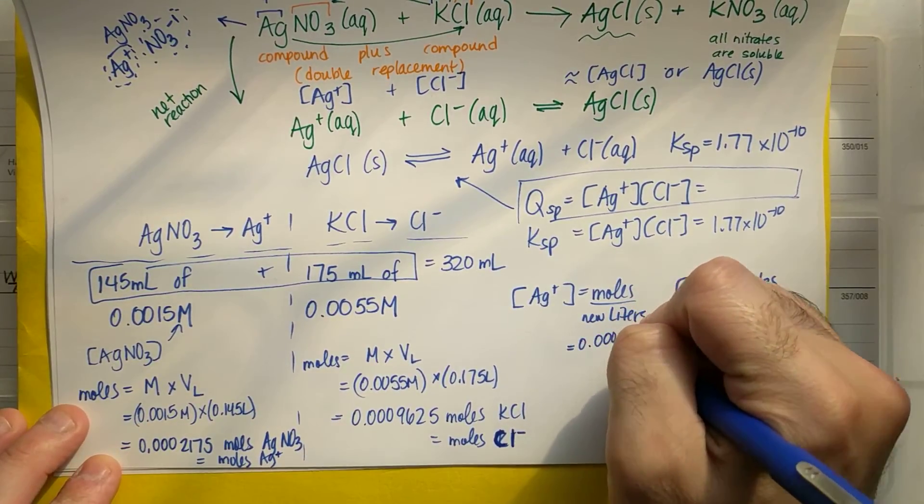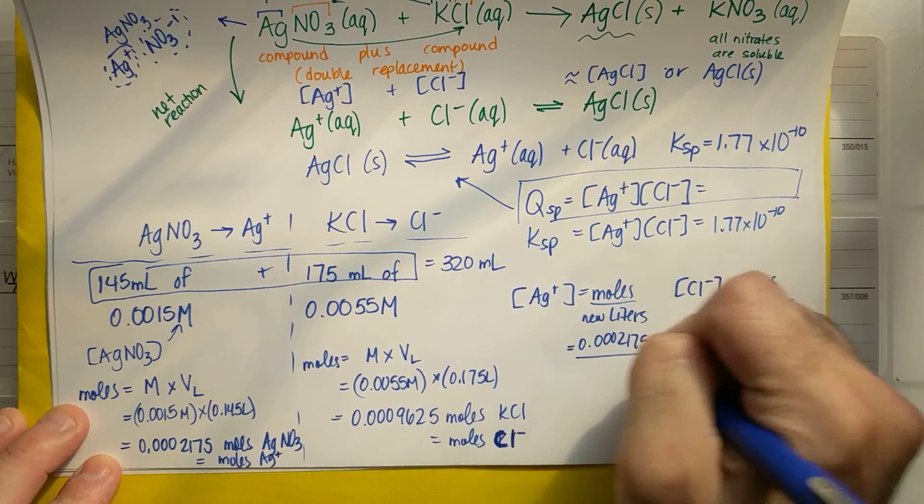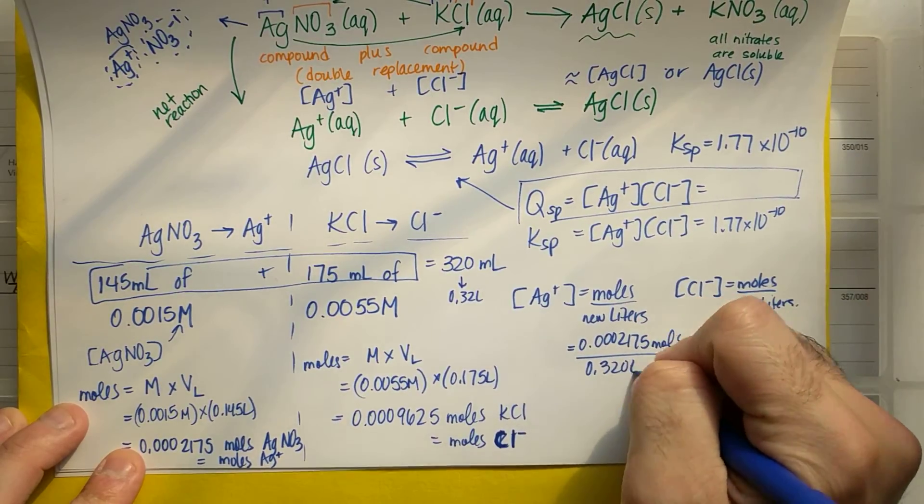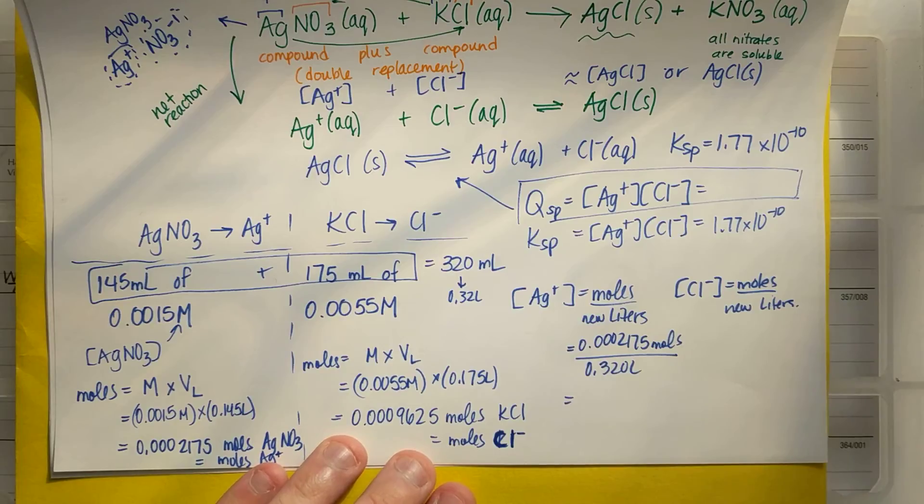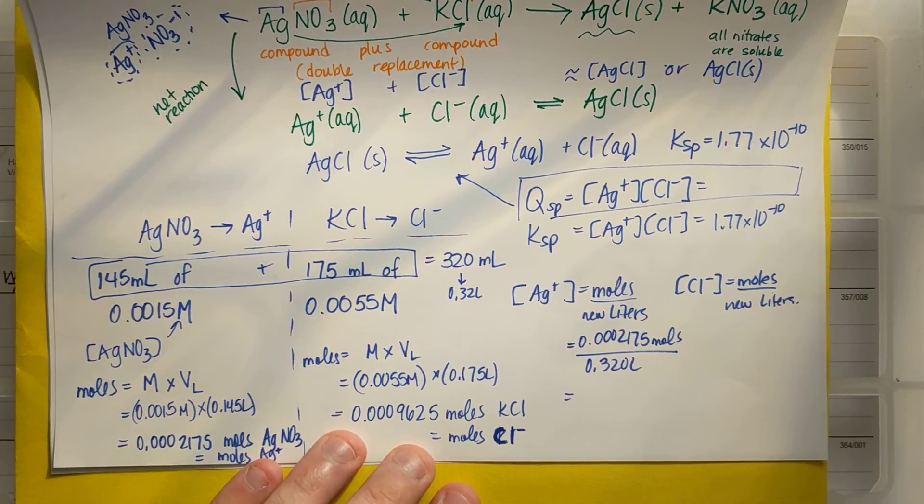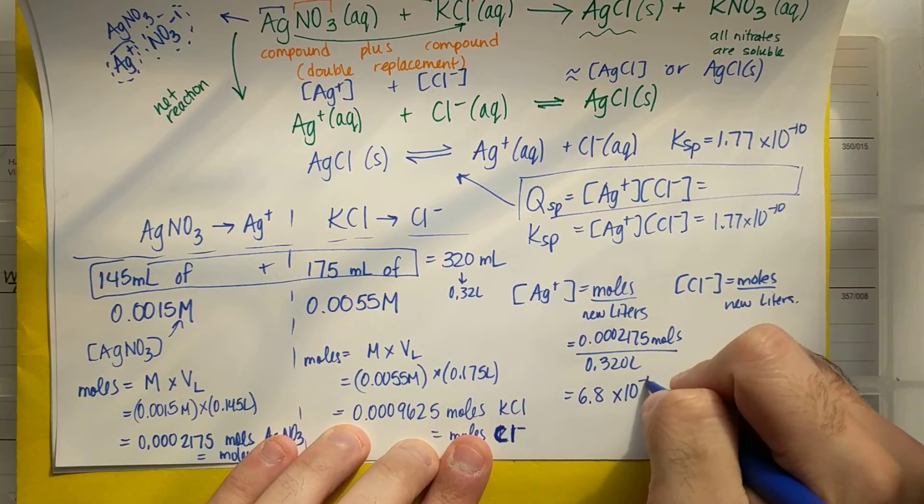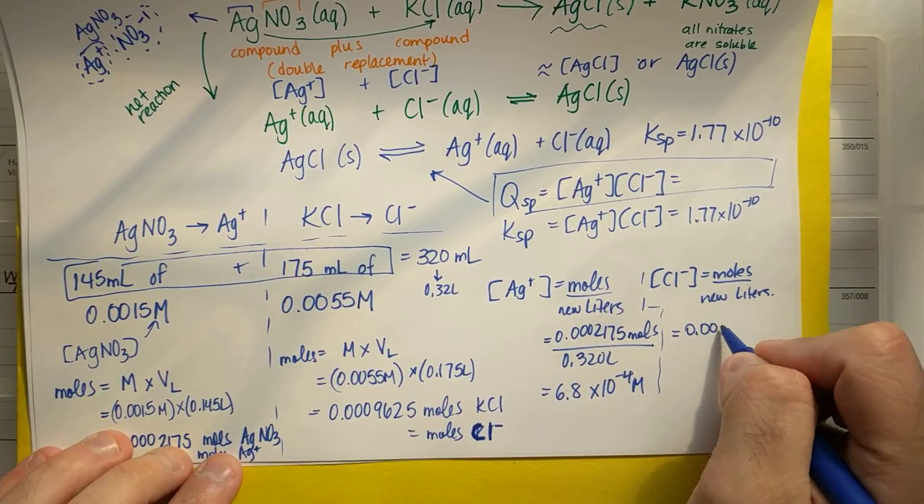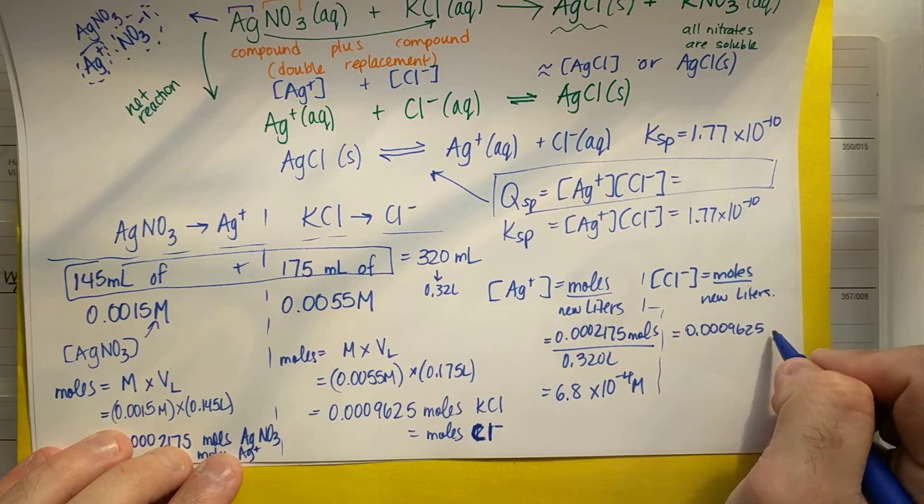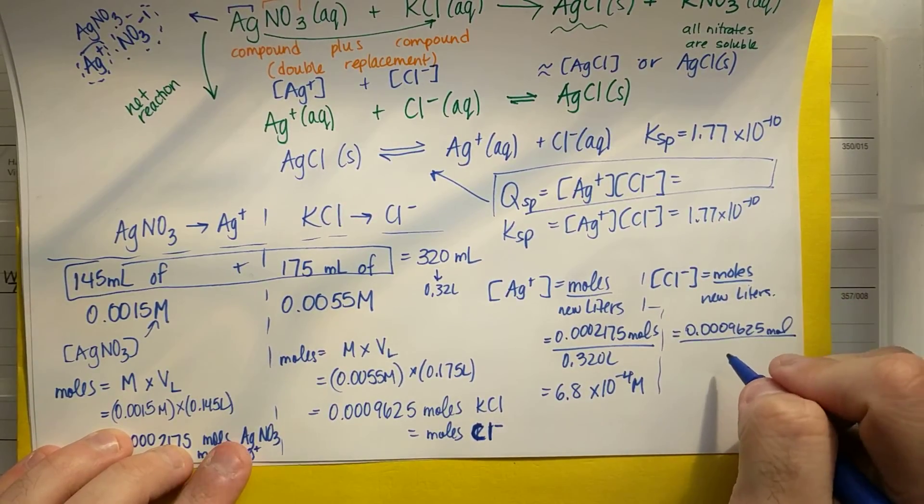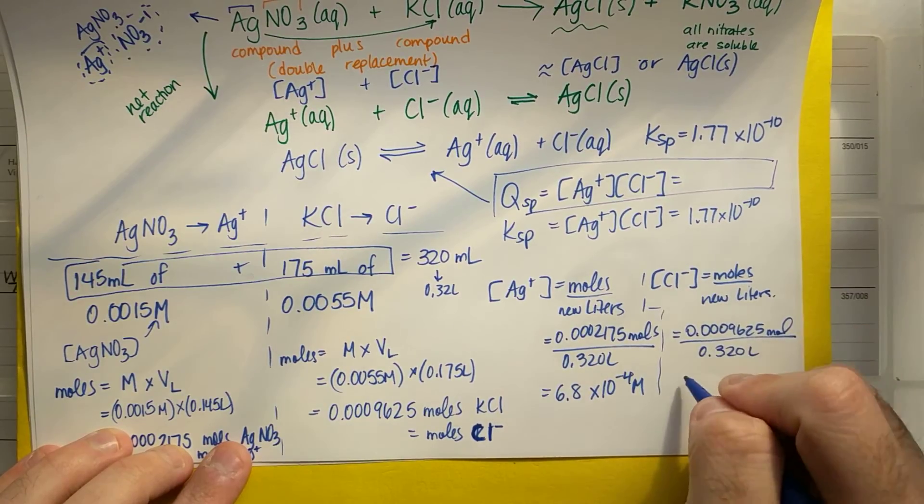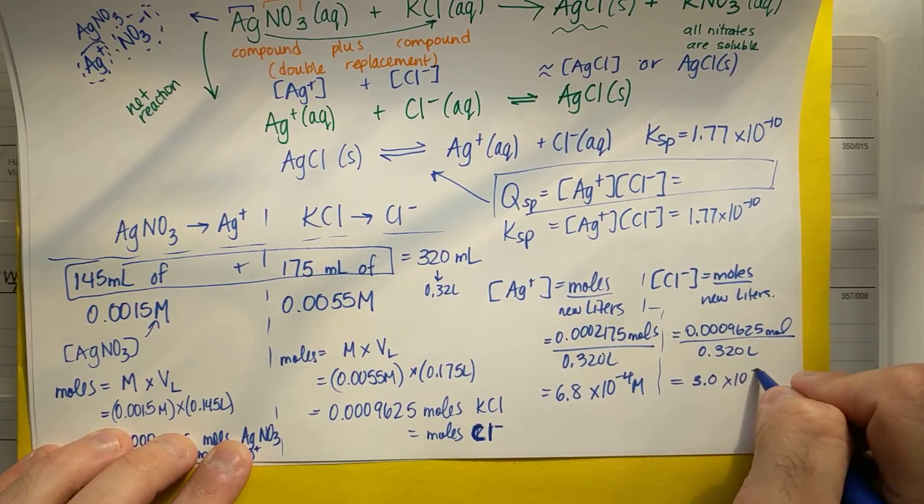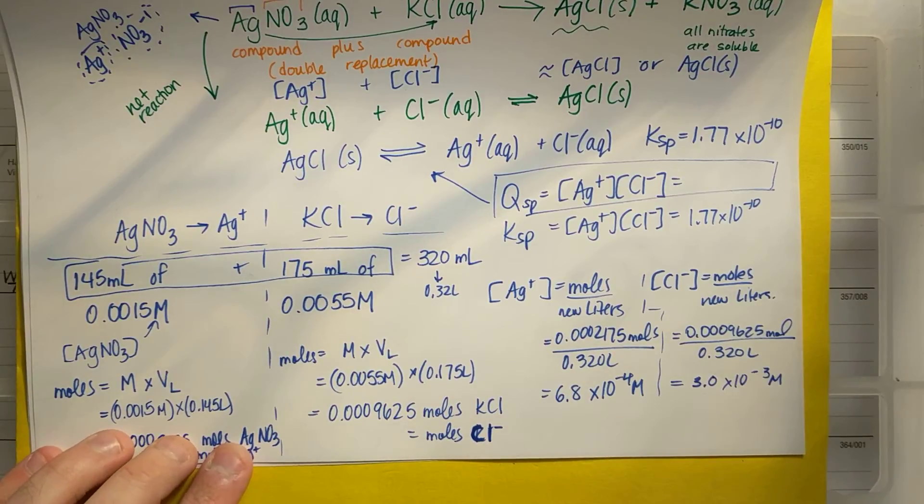So if I bring the moles back, 0.0002175 moles, and I divide it by my new volume, which is 0.32 liters, 0.320 liters. I get, and I kind of simplify this, I already got this concentration earlier today. I got a concentration for Ag plus is 6.8 times 10 to the minus fourth molar. And then for Cl minus, I plug in these moles, 0.0009625 moles divided by the liters, which is 0.320 liters. And I get, earlier today, I got 3.0 times 10 to the minus third molar. So you can check my values, check my work. These are my concentrations of my ions.